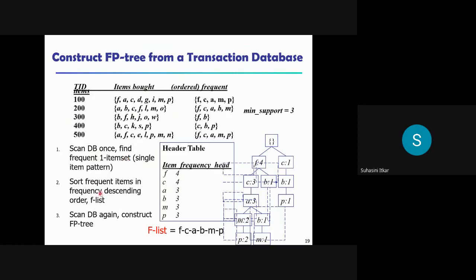The next step is to sort the frequent one items in frequency descending order. This sorted list is called the F-list. So the second step is arranging all frequent one items in frequency descending order to construct the F-list.